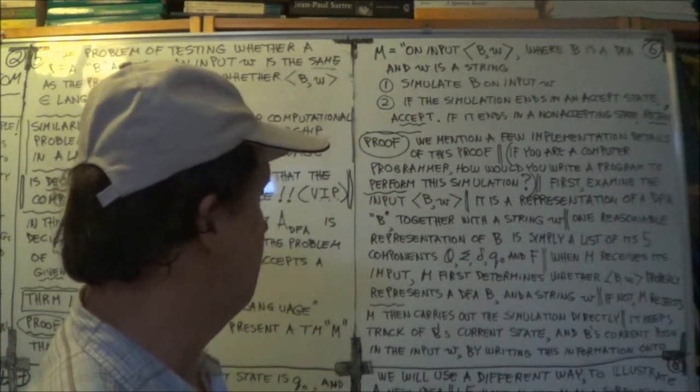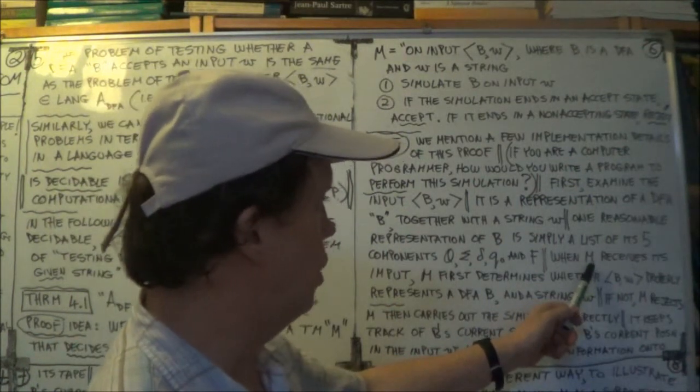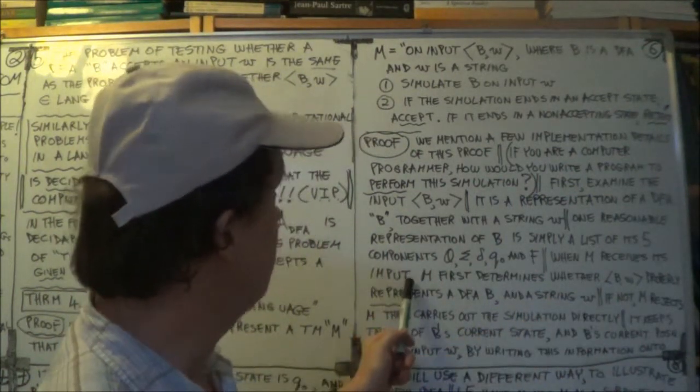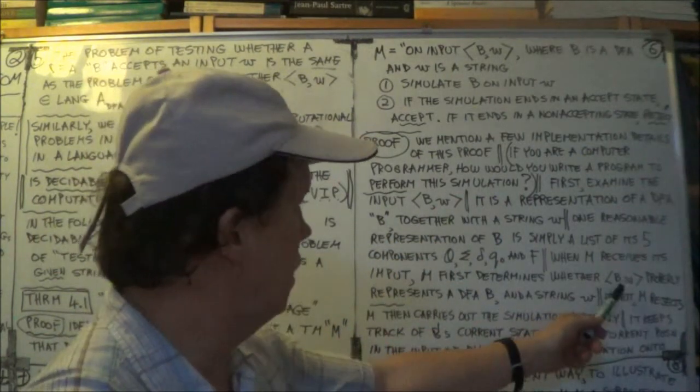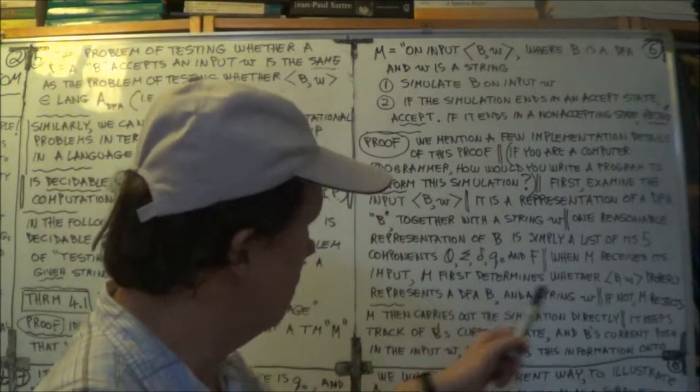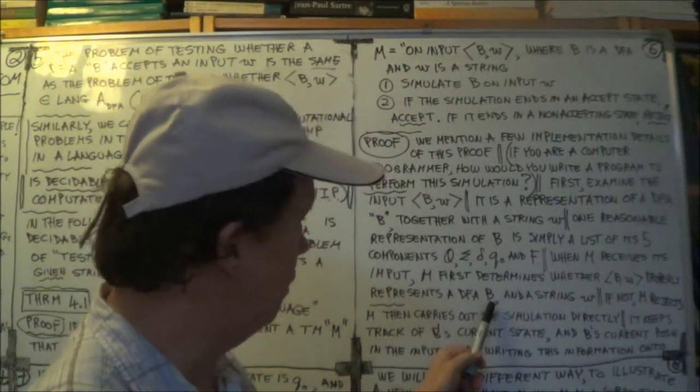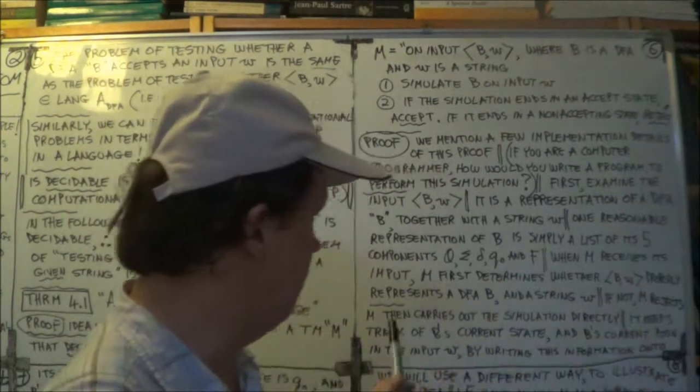Your Turing machine M, it receives its input, checks whether this input string here properly represents the machine DFA B and the string W, okay? If not, reject. I've said that before.